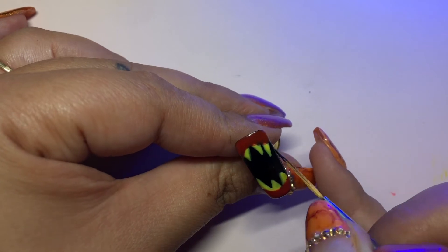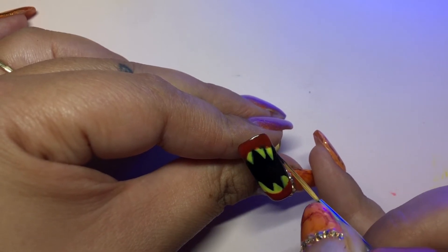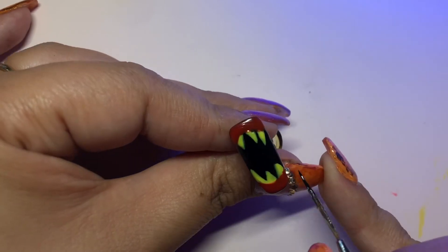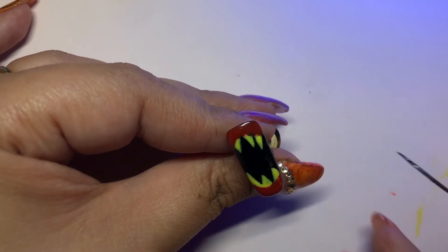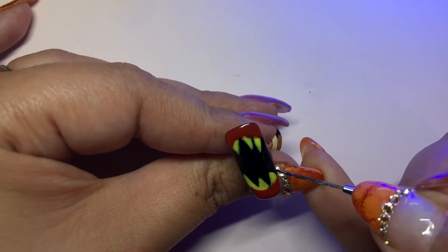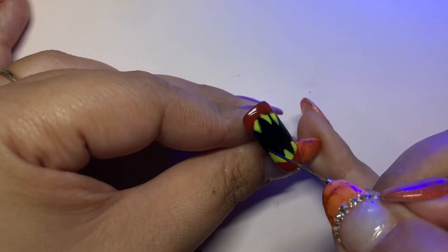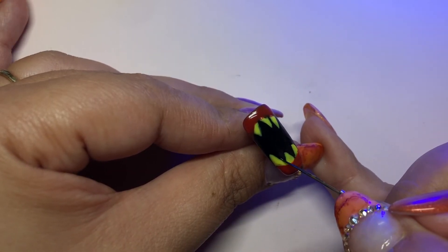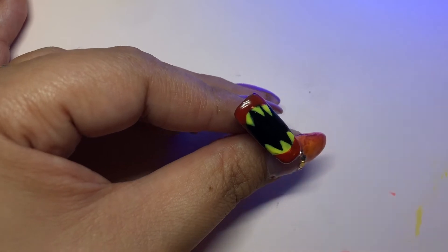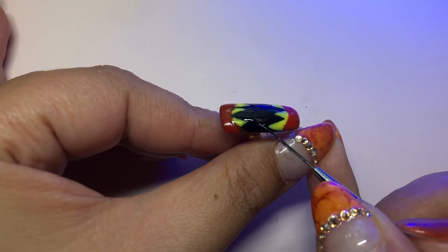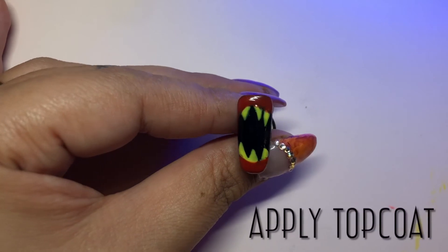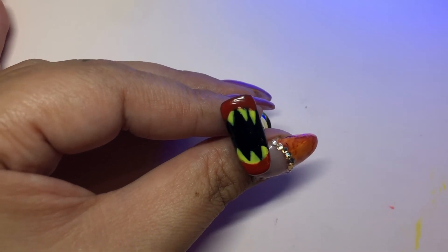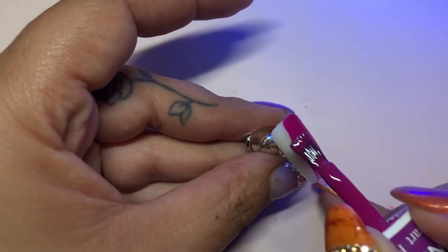The very last step is you're going to take black and go over the teeth and sharpen. Once everything's nice and sharp, go ahead and cure it and then apply top coat.